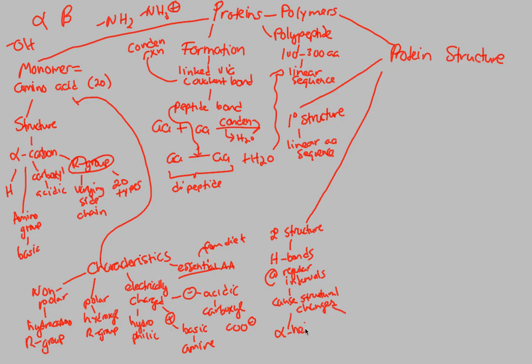We get either an alpha helix, or what is known as a beta-pleated sheet. Two different secondary structures that you must know that are caused because of hydrogen bond interactions.